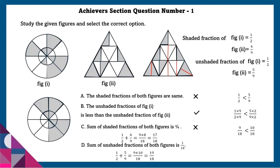Option D: sum of unshaded fraction of both figures is 1 by 18 — wrong, it is 19 by 18, so this is also wrong. So the correct option is option B.